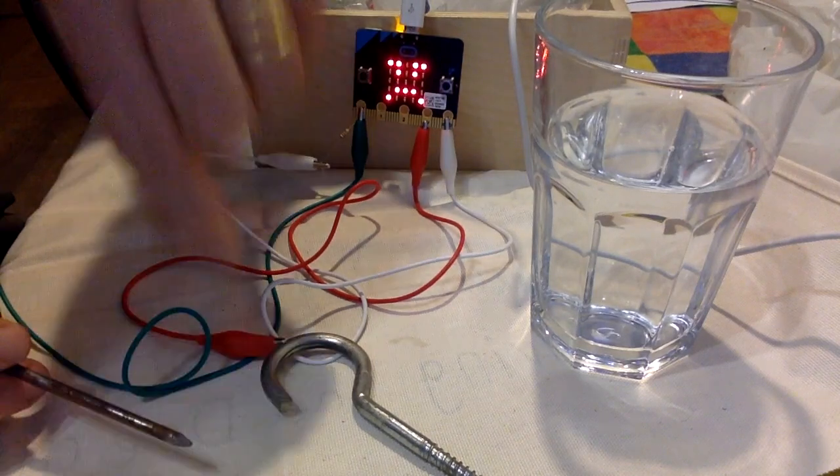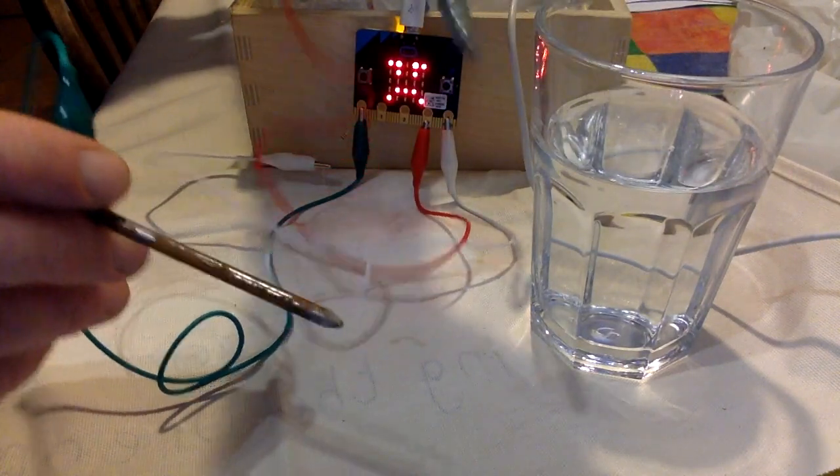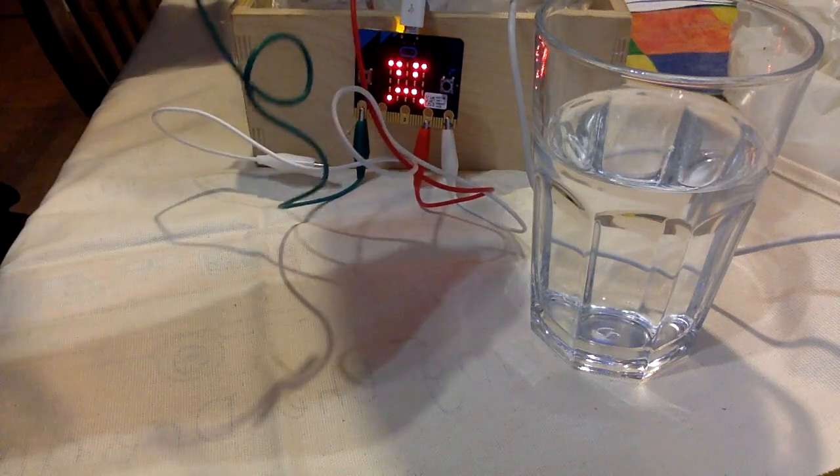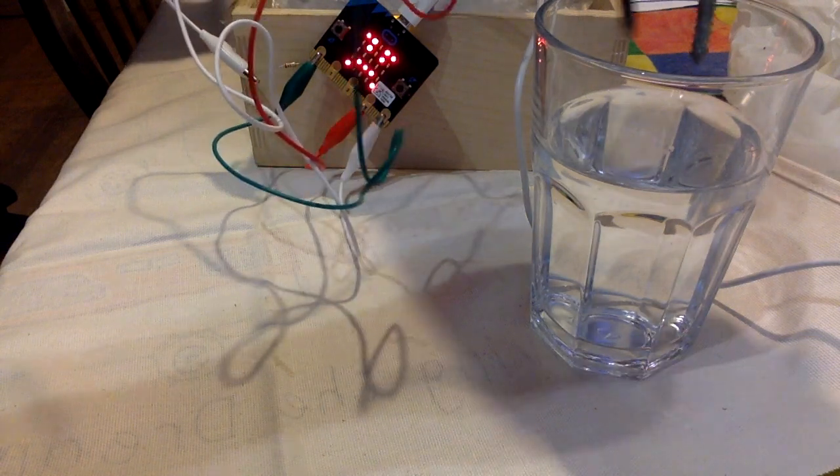At the moment it's showing a sad face because I'm assuming there's no water between these two gadgets here. So what happens if I now put them in the glass of water? My microbit turns sideways.